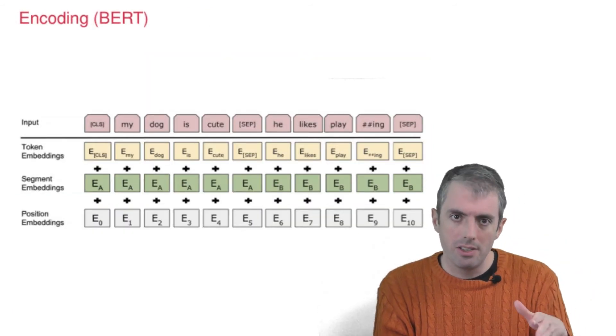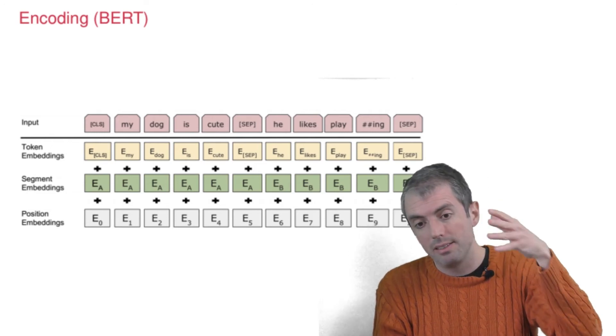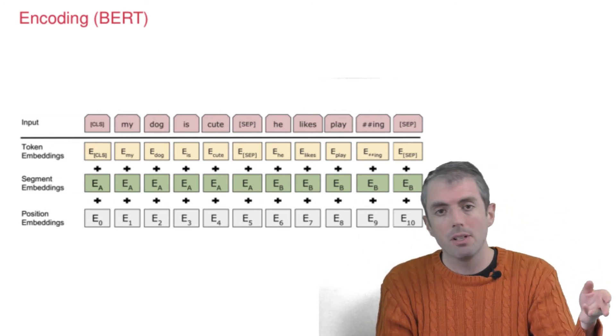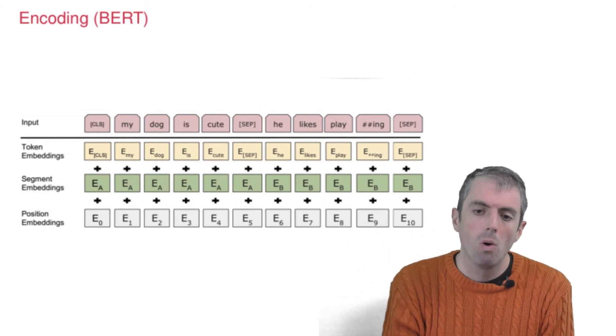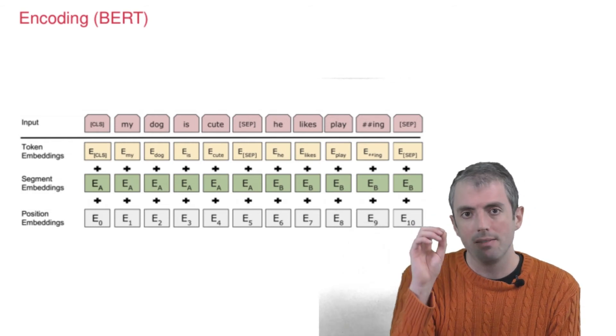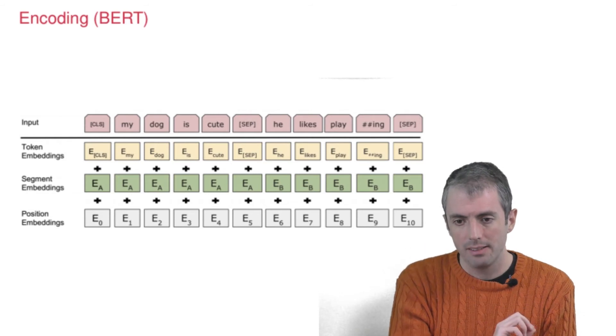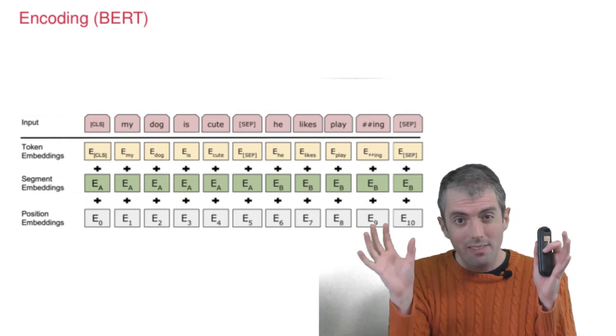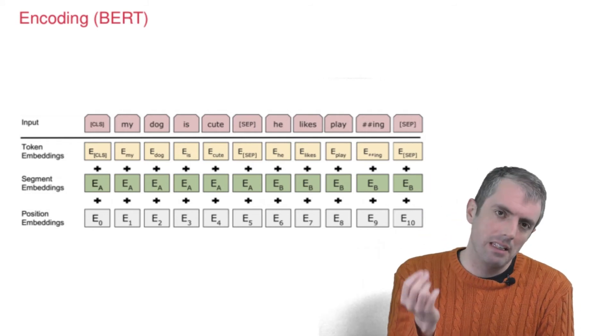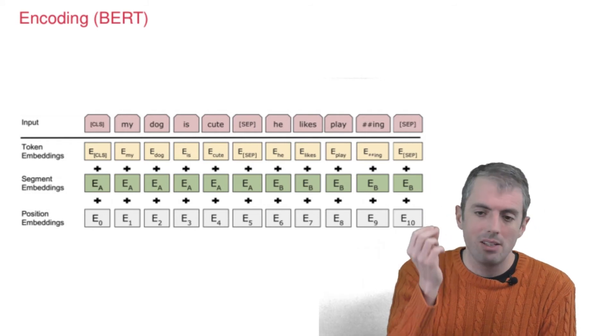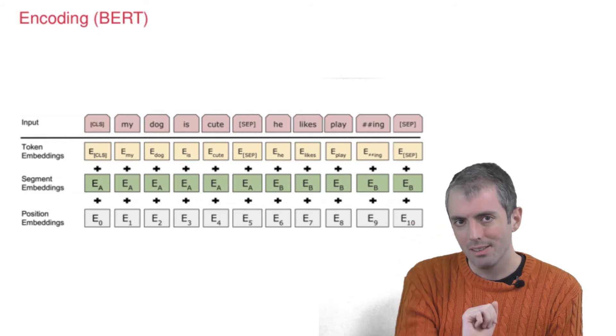Another big innovation that was in the transformer paper but extended into the BERT paper was the use of very specific encodings. So let's look at all the neat things that are going on in here. So one thing that you'll notice is that you don't just have individual tokens, you have word parts.